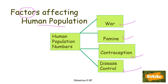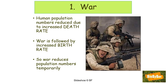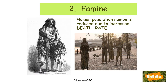War reduces human population numbers because of people killed in conflict — this must be related back to death rate. War is typically followed by an increased birth rate; people born in the years following the Second World War are known as baby boomers. So war reduces population numbers, but it is only a temporary effect. Famine: a lack of food leads to malnutrition and death due to both disease and starvation, reducing human population numbers through an increased death rate, as seen during the Irish famine.